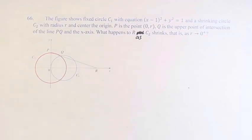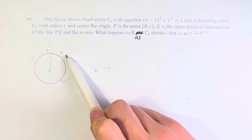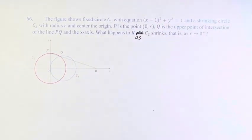Hello and welcome back to another video. In this problem we're told that the figure shows fixed circle C1, which we have here in blue, with equation (x - 1)² + y² = 1